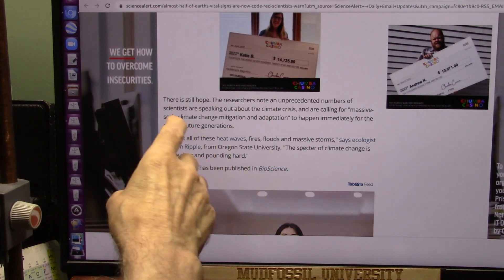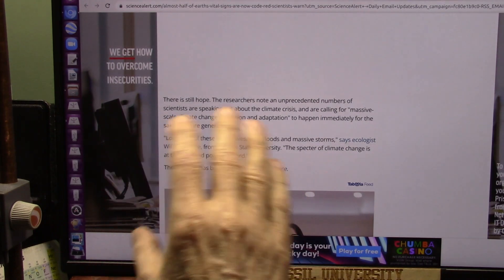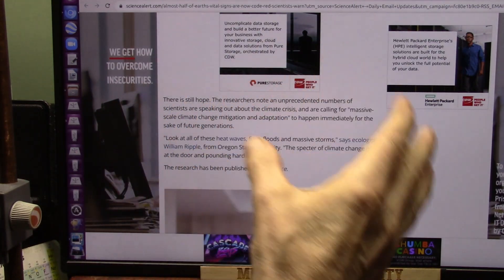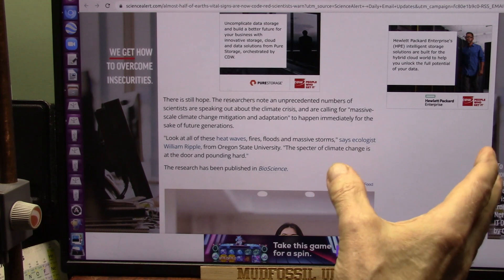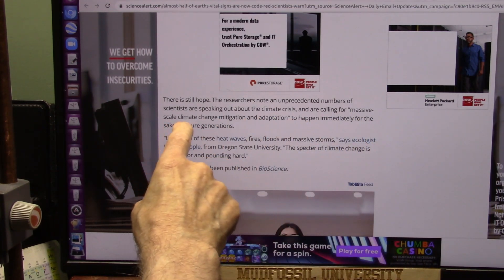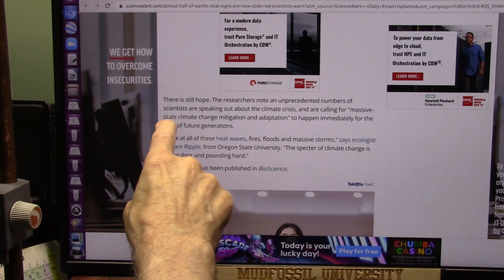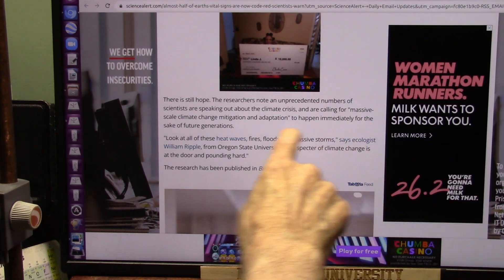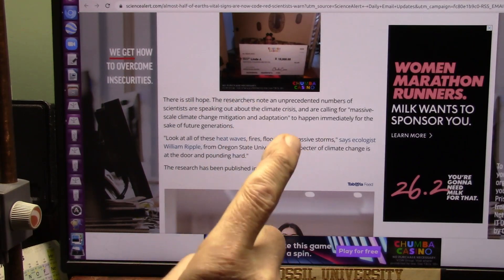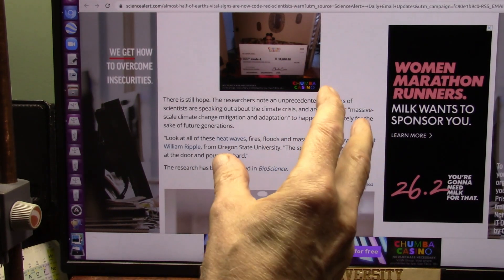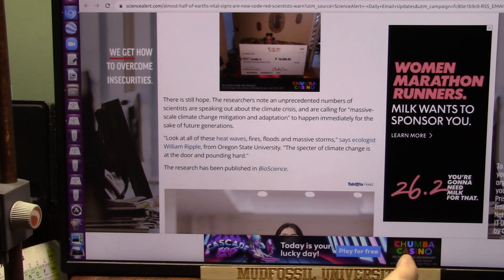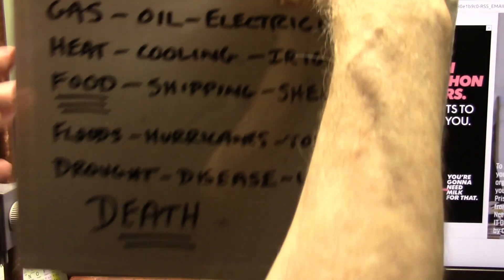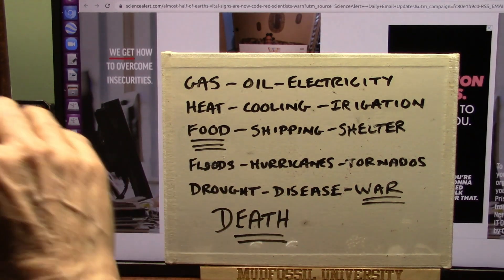This was from an article that came out today saying climate is a disaster, 100% disaster, but there is still hope. Researchers know an unprecedented number of scientists are speaking out. I am not allowed to speak in this realm. I've been trying for many years. We have to do massive-scale climate change. There's no way for them to do it. They don't even know what's causing the problem. It has to be immediately done for the sake of future generations.